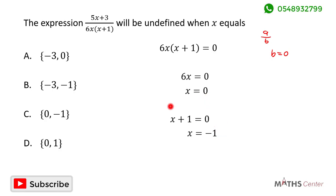It means that this expression 5x plus 3 divided by 6x times x plus 1 will be undefined when x is equal to zero or negative 1. When we look through the options here, we can see that the correct option is C.